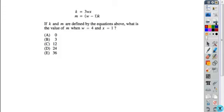So this one asks you to evaluate m when you're given w is 4 and x is 1, so just substitute those values in. So if we take the equation for m, m is equal to w is 4 minus 1 times k, well we can also replace k with its equivalent.